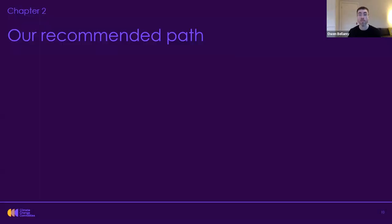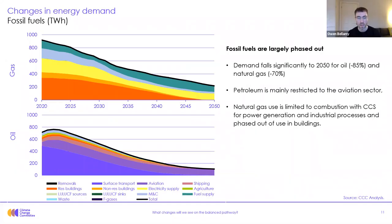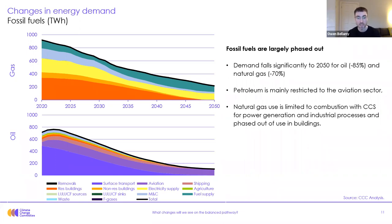Moving on to the energy sector, in particular electricity generation and hydrogen. A few slides highlighting the main overarching changes in energy demand out to 2050 for the balanced pathway. You can see gas at the top and oil demand by sector — both oil and gas demand fall very substantially by 2050 compared to today's levels. Oil is down 85% and gas is down 70%. The two big users of gas are electricity supply — there is still use of gas as gas CCS in power generation — and also in fuel supply, particularly to make hydrogen.